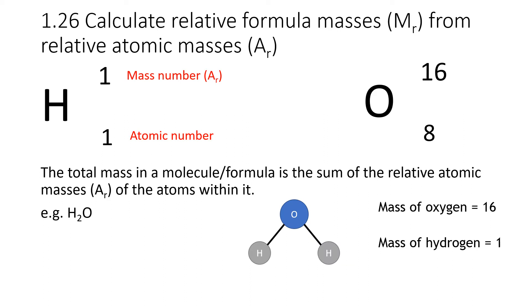Okay, now we're going to look at 1.26, calculating relative formula masses MR from relative atomic masses AR. If you remember from earlier videos, when we look at the periodic table, you see all the elements in little squares, and they have two numbers. The top number being the mass number, and the bottom number being the atomic number. We're going to be focusing on the mass number, or the AR in this case.